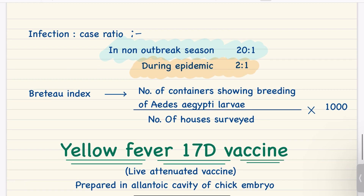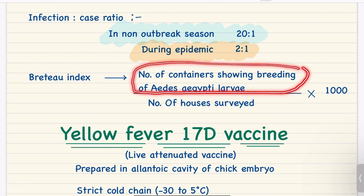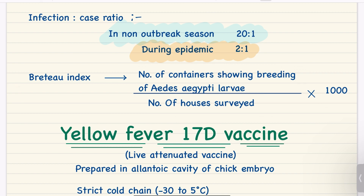The infection-to-case ratio in non-outbreak season is 20 to 1, but during an epidemic it reaches 2 to 1. The Breteau index is defined as the number of containers showing breeding of Aedes aegypti larvae upon the number of houses surveyed, multiplied by 100. This is very important and can be asked in viva or theory exams.